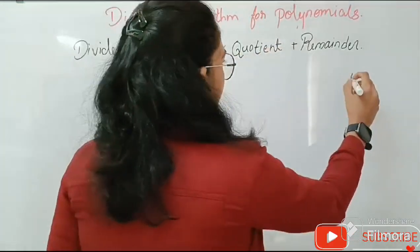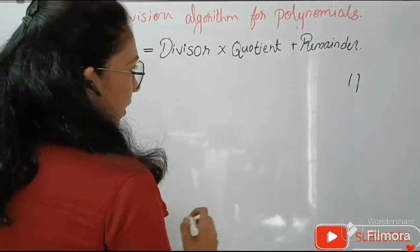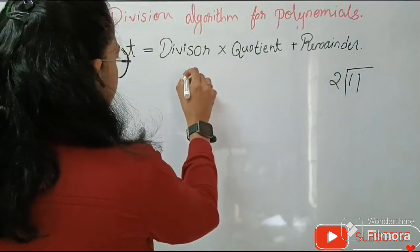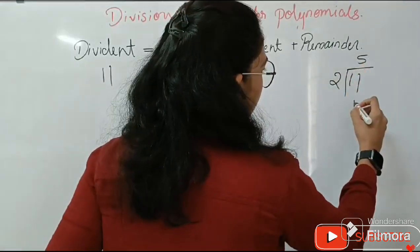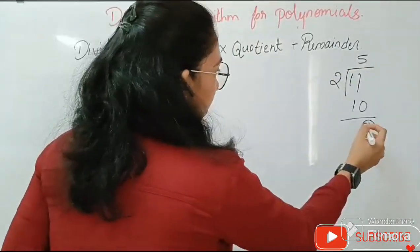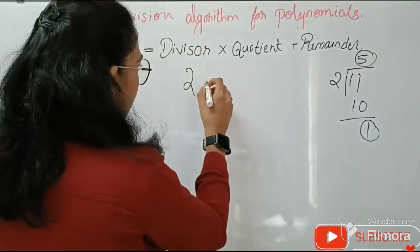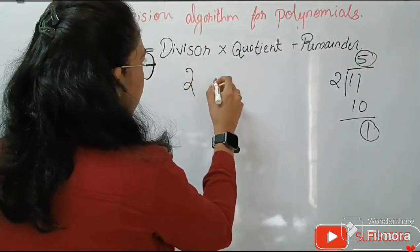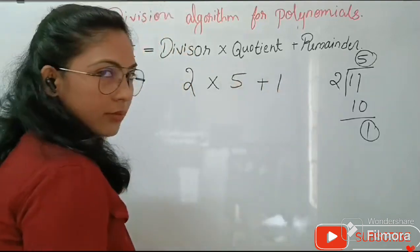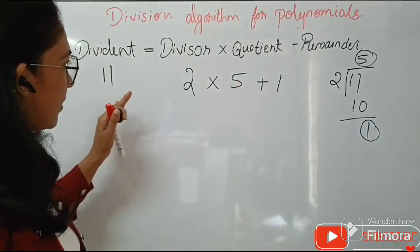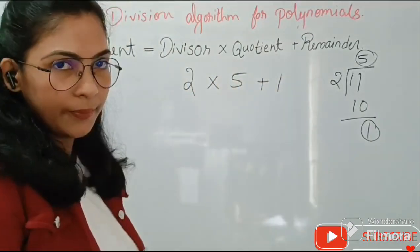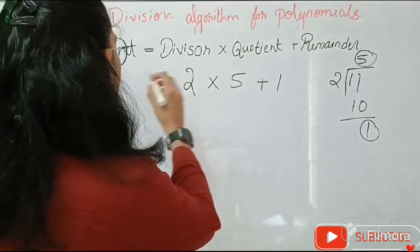Suppose we take 11 as dividend. We divide this number by 2, so divisor is 2. We get 5 times 2 is 10, and here it is 1. So this 1 is the remainder and 5 is the quotient. We can rewrite this as 2 times 5 plus 1, that is divisor 2 into quotient 5, plus remainder 1, and 2 times 5 plus 1 is 11.